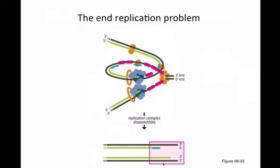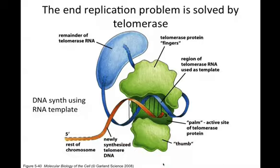Here's another way to look at the end replication problem. This is the picture showing replication — one unit moving forwards — and eventually you get to the point where you can't lay down another primer at the end. That's why you have the end replication problem, resulting in that progressive shortening. The solution is telomerase — DNA synthesis using an RNA template. The telomerase enzyme itself carries its own template.